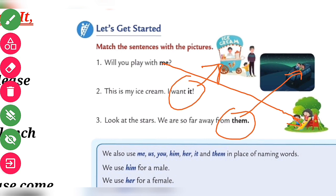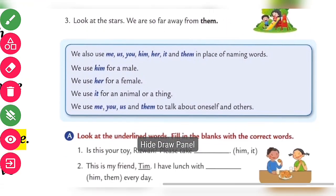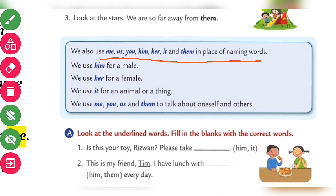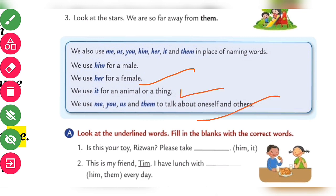We use me, you, him, her, it, and them in place of naming words. We use 'him' for male, 'her' for female, 'it' for an animal or thing, and we use 'me,' 'you,' 'us,' and 'them' to talk about oneself and others.